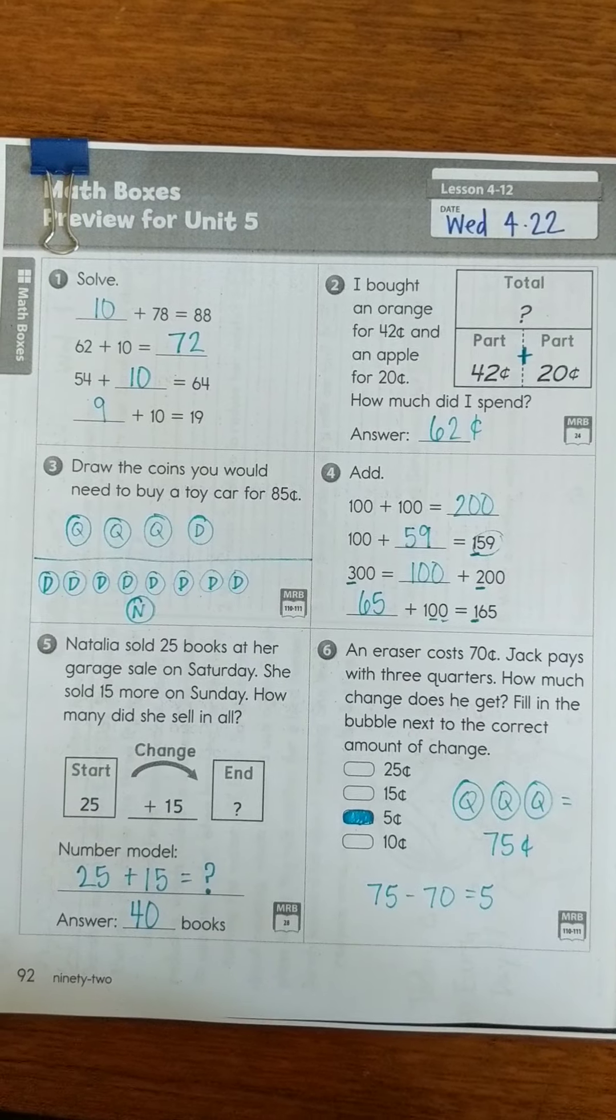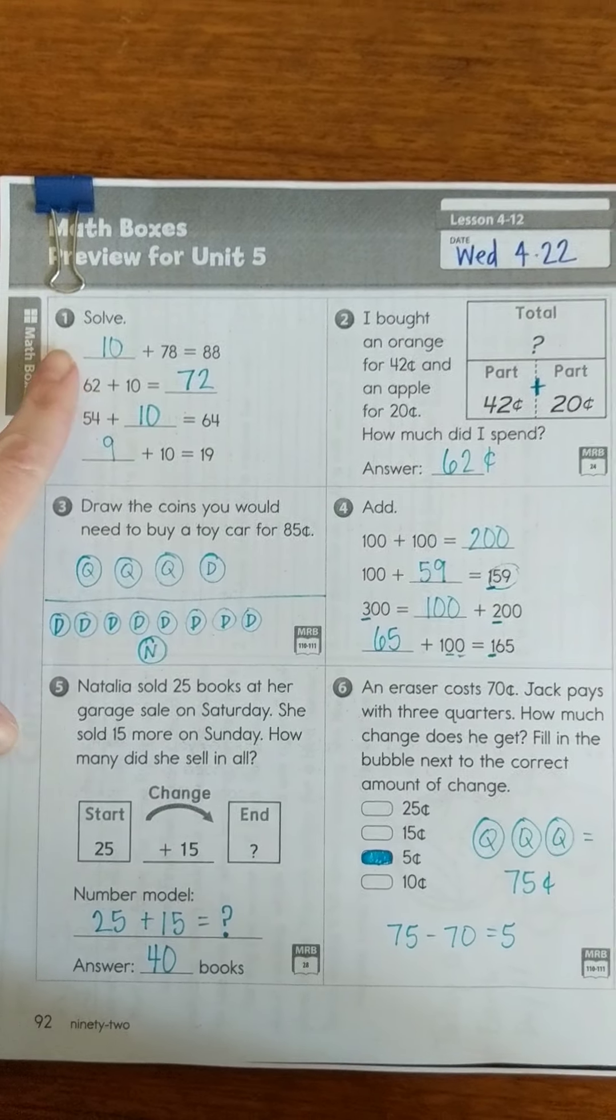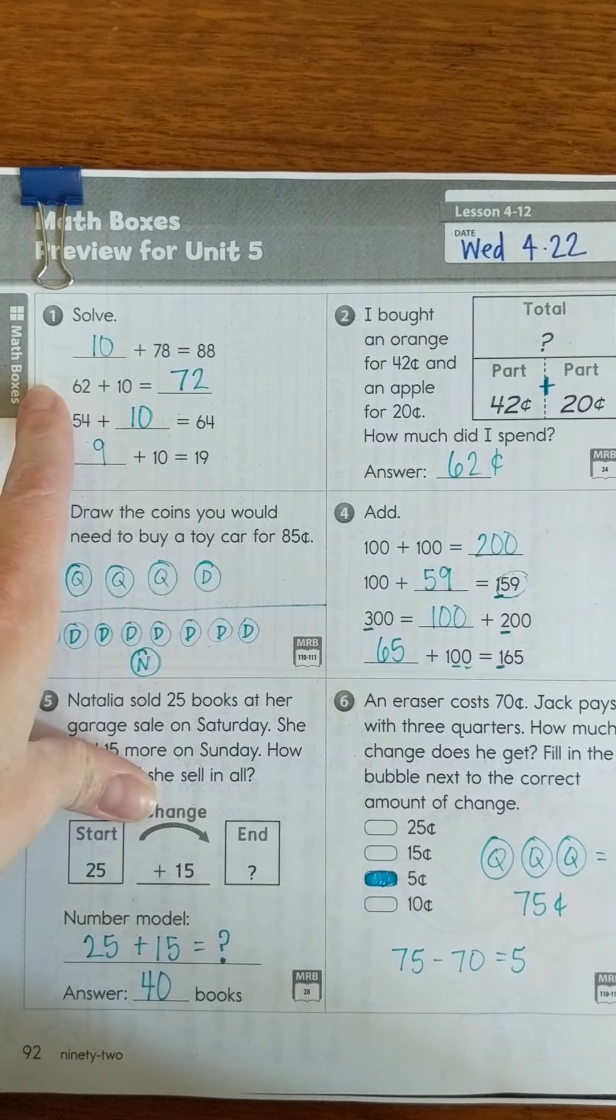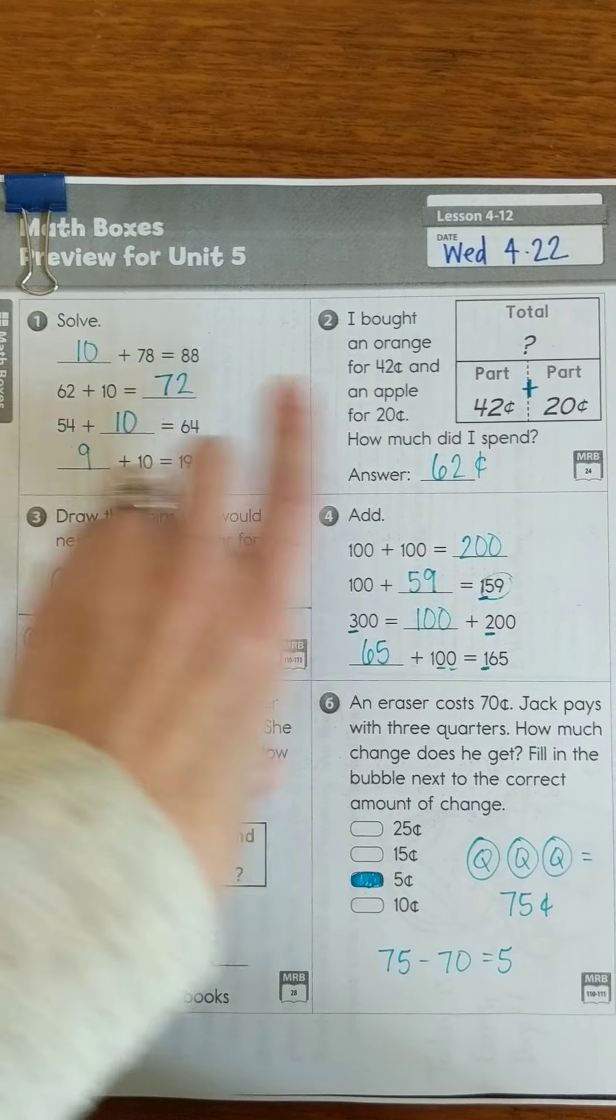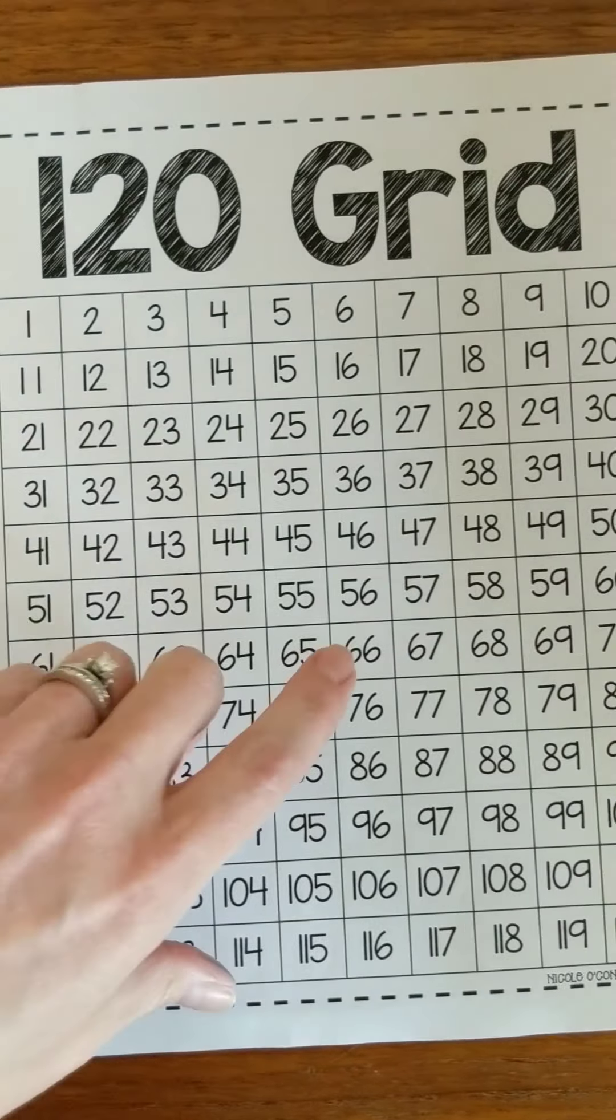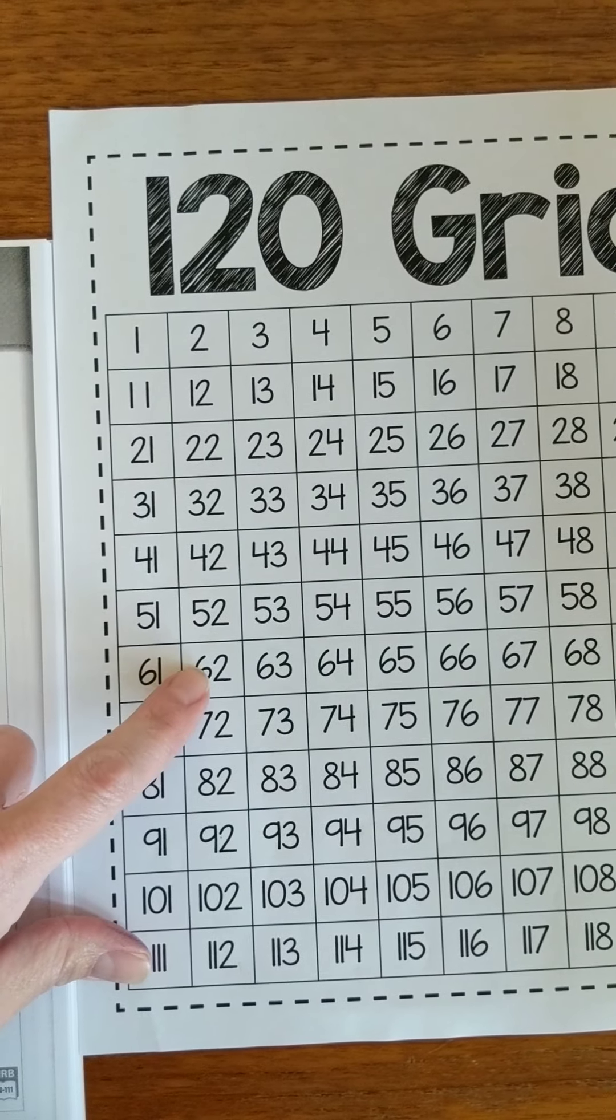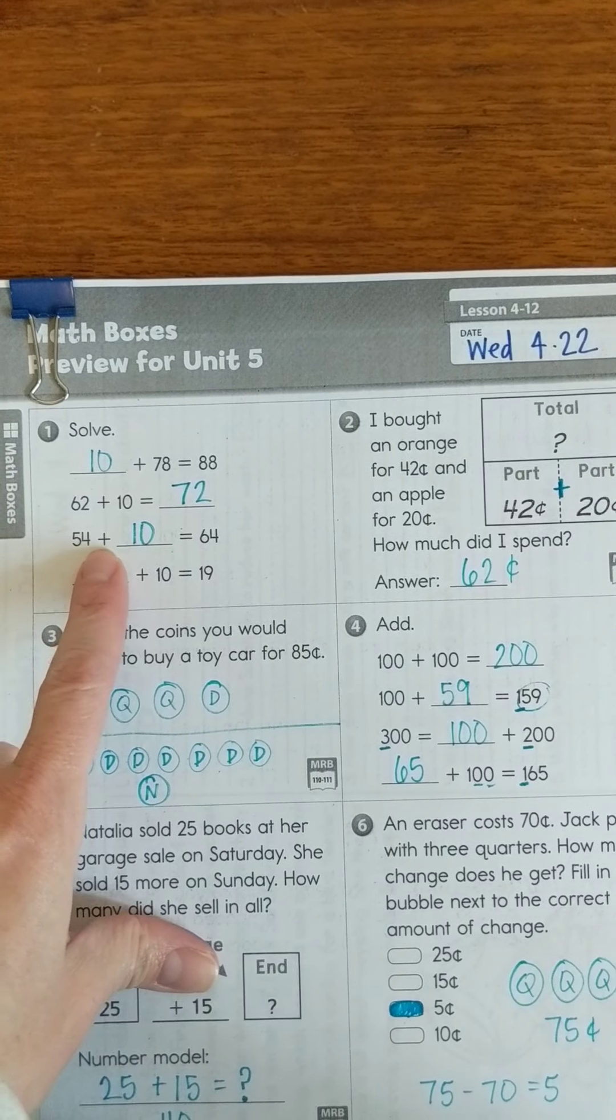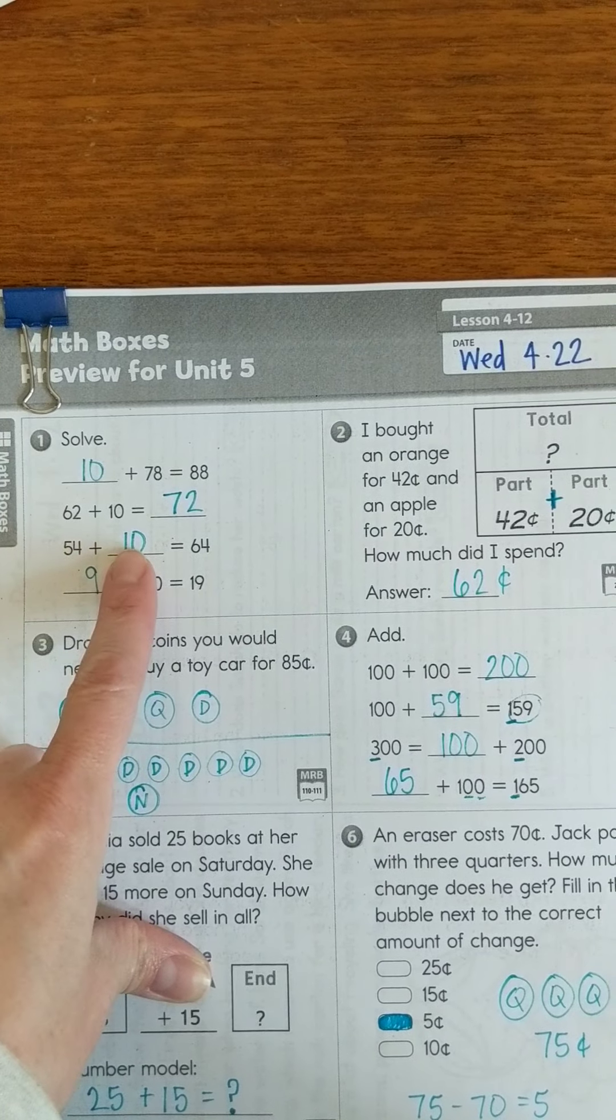We're going to go ahead and go over the answers now for the rest of the math boxes that we didn't do. So up here we did a couple of them together but I left the other two for you to do on your own. 62 plus 10 is 72. Again, if I find 62 on here and I know that I can add 10 by jumping down, it puts me at 72. 54 plus blank equals 64. Well, I knew that I just had to make that jump.